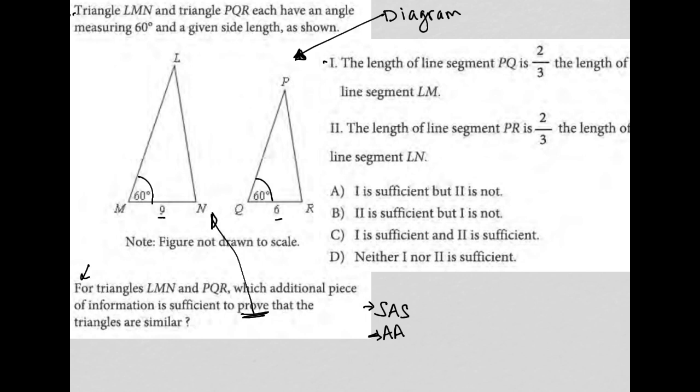So the first option here is that the length of line segment PQ, so this guy, is two thirds the length of line segment LM. So two thirds the length. Well, is six two thirds the length of nine? Yes, it is. Six is two thirds of nine. Because six over nine reduces to two thirds - two goes in the six twice, three goes in the nine three times. So this is two thirds. Six is two thirds of nine, so that means this is good.